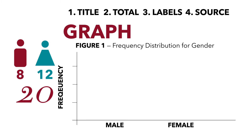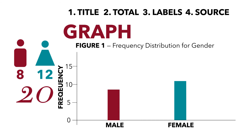We know that we're displaying frequencies, so I'm going to label my axis and label the tick marks. We know that we have 8 males, so I'm going to draw a bar — this is a bar graph — up to the 8 point. We do the same thing for females; there are 12. You can include the n or the number on each bar. To complete our graph, we need source: Statistics Class Survey, n equals 20.